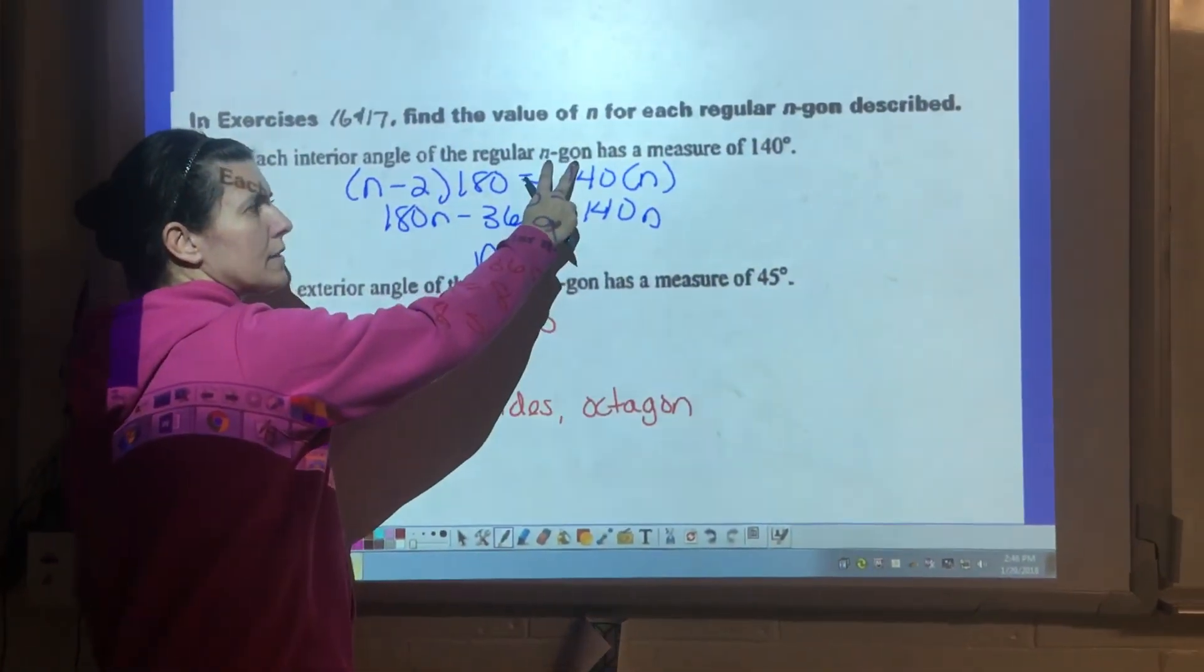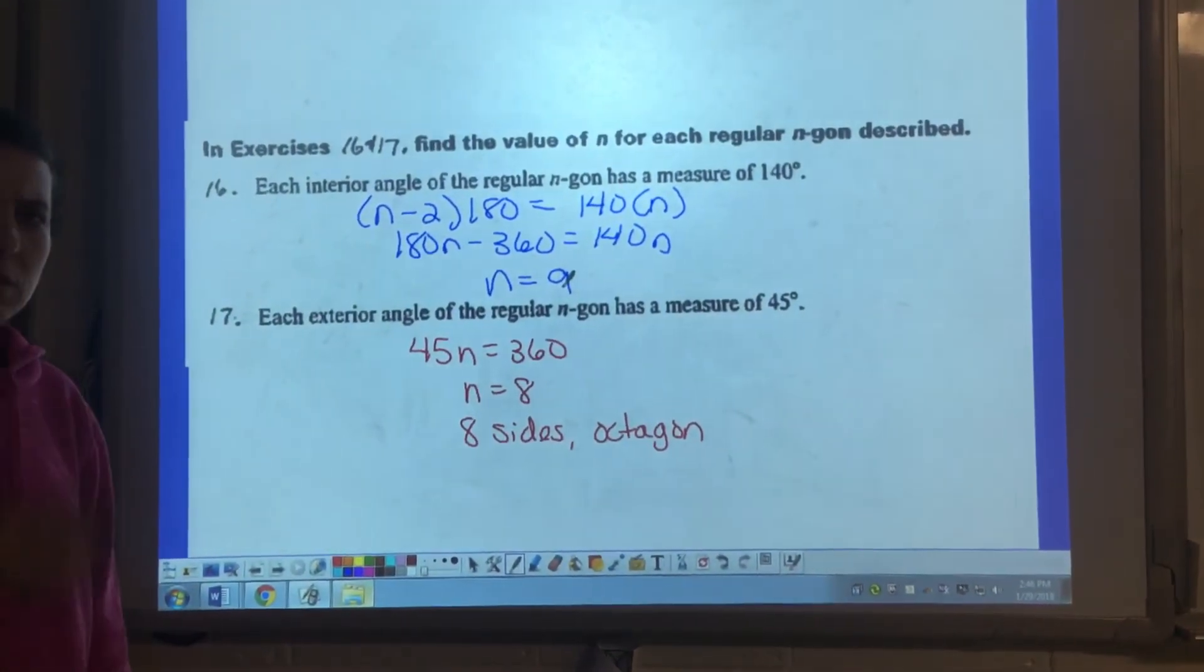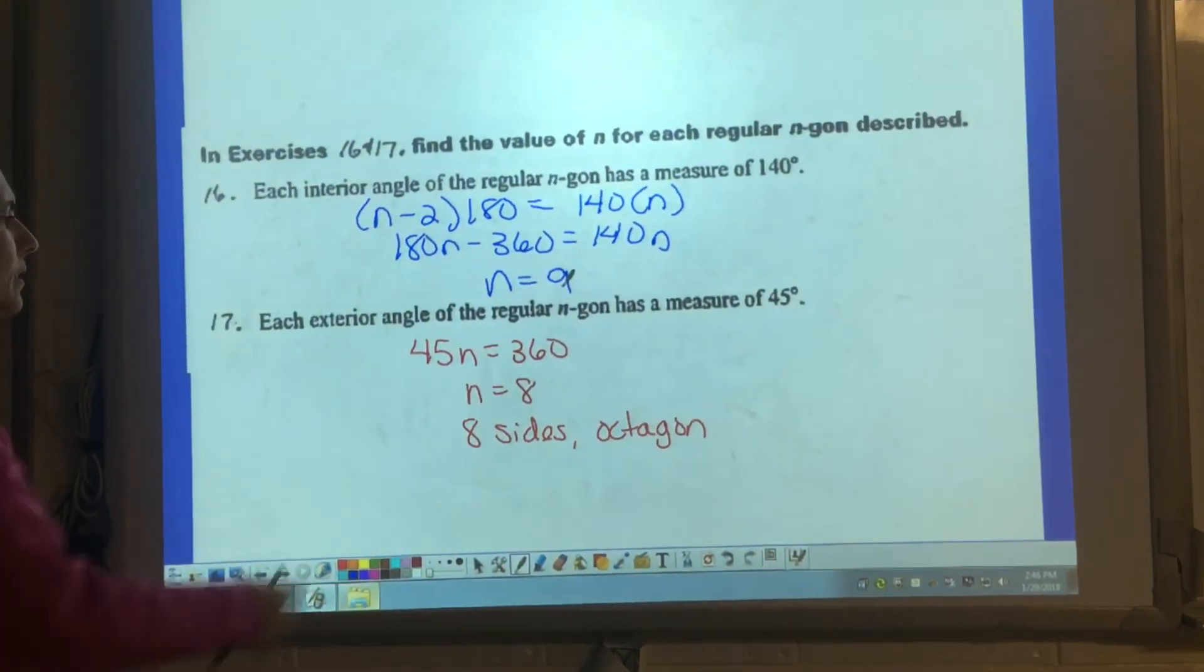N-gon is just a generic way of saying a 4-sided figure, a 10-sided figure. Typically it's for ones that aren't named in the previous slide.